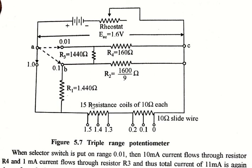Now when the selector switch is put on 0.01, then 10mA current flows through R4 and R3, so the total current will be 10mA through this path. The incoming current from this switch will be 10mA.